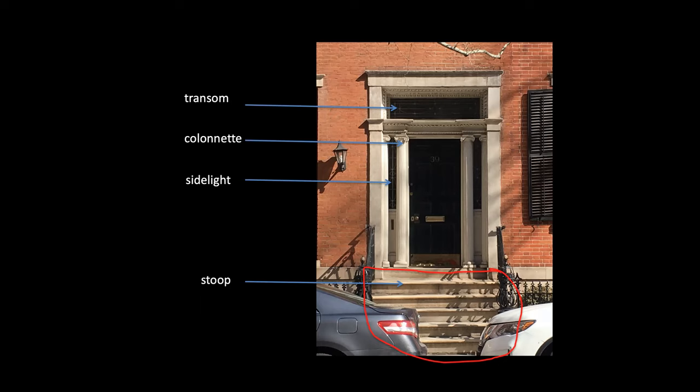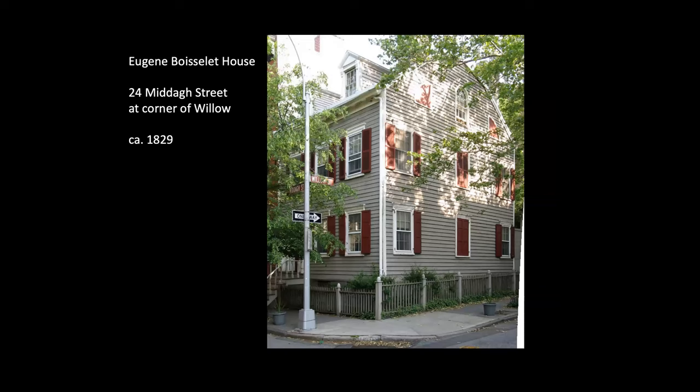Let's look at some buildings in Brooklyn Heights from the federal period. This is the Eugene Quasselet House at the corner of Middagh and Willow, from 1829 — or maybe a little earlier or later, but basically 1820s. This is part of that first wave of construction in Brooklyn Heights. It's definitely a federal house — it's got the pitched roof, two dormer windows up at the top. The material here is not brick; this is clapboard wood siding, which you also see a lot. It's two stories plus an attic.